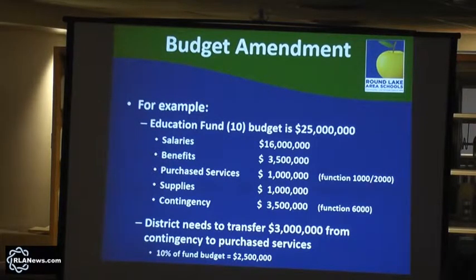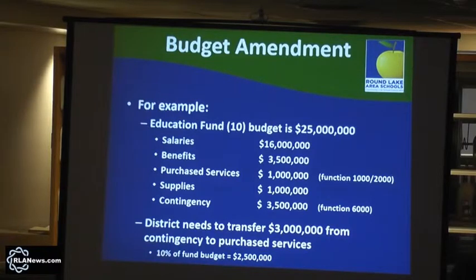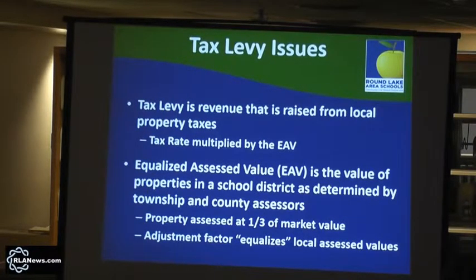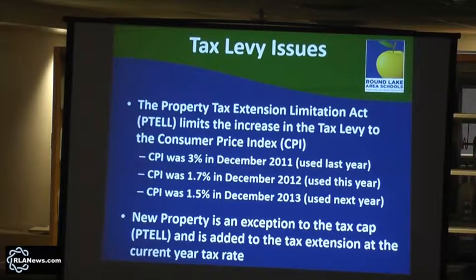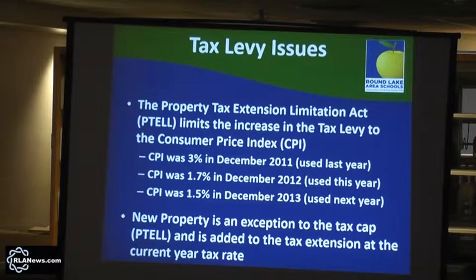Some of the tax levy items — these are things we've shared with you in the past. Tax levies are the revenue raised from local property taxes. The EAB is the property value that has been equalized for each location. You may have heard of P-TEL — that's the tax cap for districts around the state. Our taxes can only go up by the CPI percentage: this year it's 1.7%, next year it's projected to be 1.5%, and it always uses December of the prior year. So we don't have the authority to raise taxes to whatever we want — it's capped at 1.5% for next year.